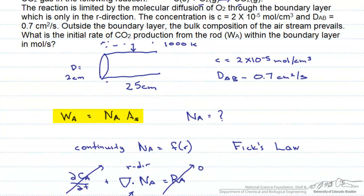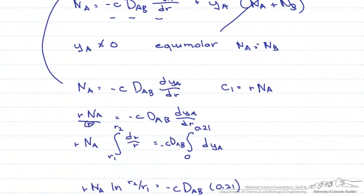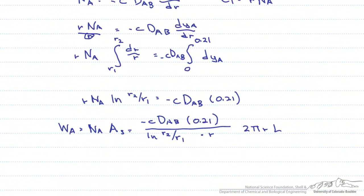Let's use this and insert it into our original equation for our initial rate of CO2 production. This simplifies to minus C times the diffusion coefficient times 0.21 over the natural log of R2 over R1 times 2 pi L.